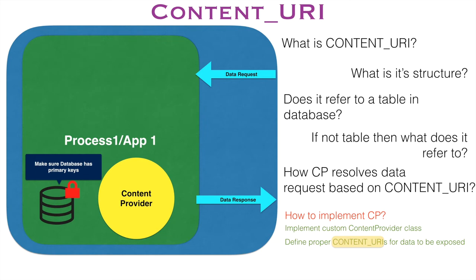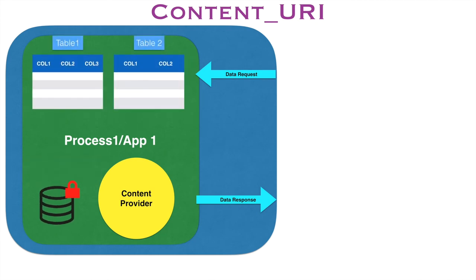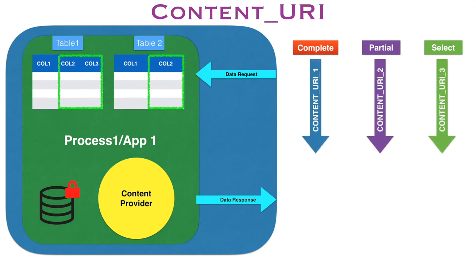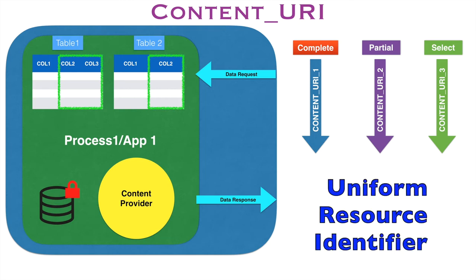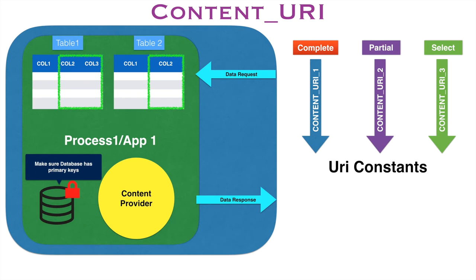These are all perfectly legitimate questions. Let us spend some time understanding what Content URI is all about. Let's assume we have a database with one or two tables. Whenever a request comes from the Content Resolver to access any dataset, the request might be for a complete table, some columns of a table, or a select statement combining columns from two or more tables. Depending on which data request is being made, you have to define unique Content URIs for accessing that particular dataset. Simply put, a Content URI is nothing but a URI constant used to resolve which data needs to be exposed.